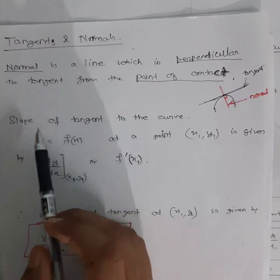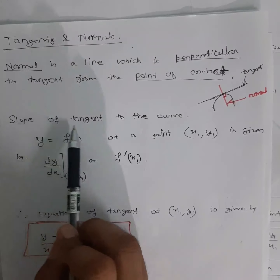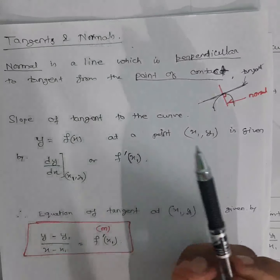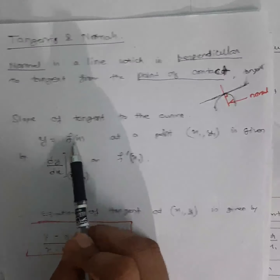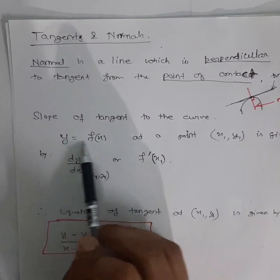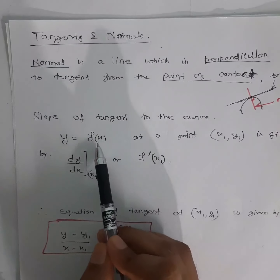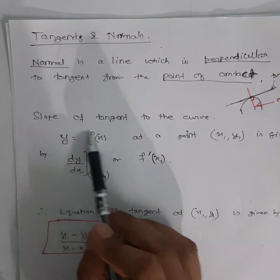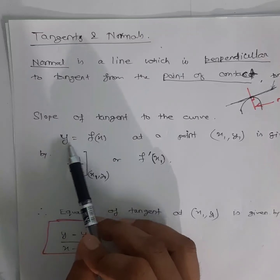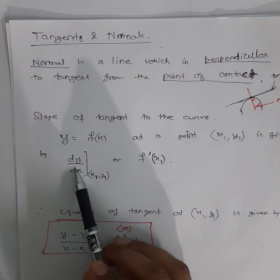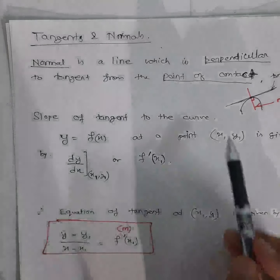The slope of the tangent to the curve: if you have a curve y = f(x), you know how to find the slope at any point. The slope of the tangent is nothing but the derivative, dy/dx. This gives the slope of the tangent at any point on the curve.